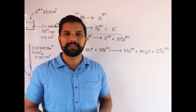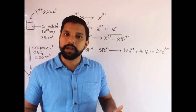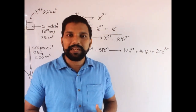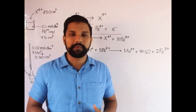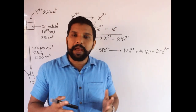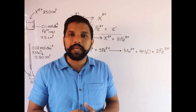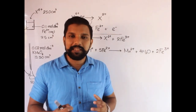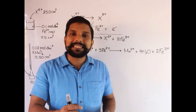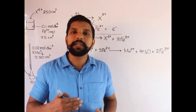Potassium permanganate can quantify reducing agents such as hydrogen peroxide, sulfite ions, and ethanedioate ions — you can try writing the balanced ionic equations for these. KMnO₄ can also be used to quantify oxidizing agents using back titration. Unlike direct titration, the oxidizing agent whose concentration we want to find is reacted with a known excess amount of Fe²⁺ ions, and the remaining Fe²⁺ is then titrated.